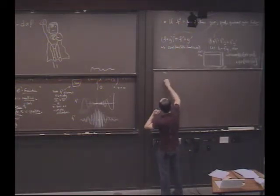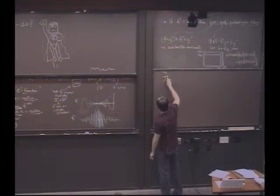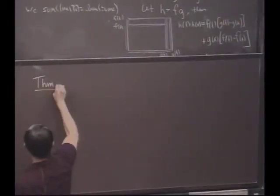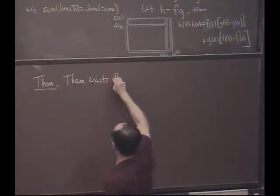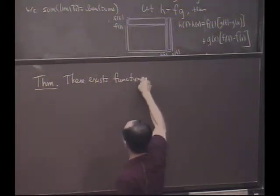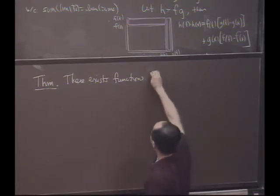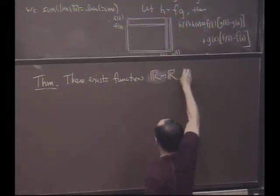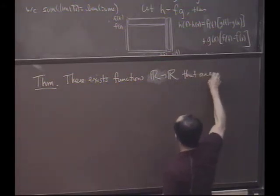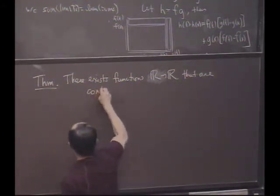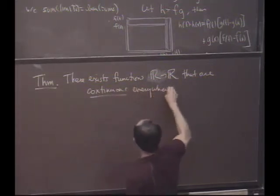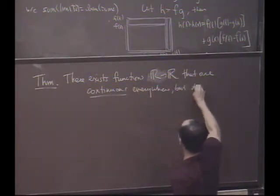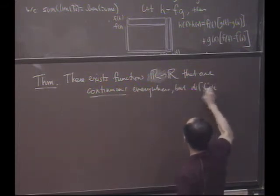Okay, more of you said yes than no. But in fact, the answer is no. So here's a theorem. There exists functions, some of the strangest functions you'll ever meet, that are from R to R, that are continuous everywhere, but differentiable nowhere.